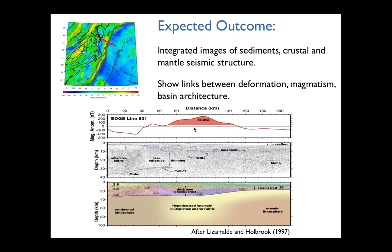This image was acquired much earlier — an old paper by Dan Lizaraldi and Steve Holbrook, one of the earliest acquisitions along this portion of the East Coast. It shows the rifted margin with seaward dipping reflections and a fast anomaly in the lower crust, suggesting syn-rift magmatism has a dramatic expression in the crust, with possibly a complementary expression in the mantle — which is what we wanted to look for.